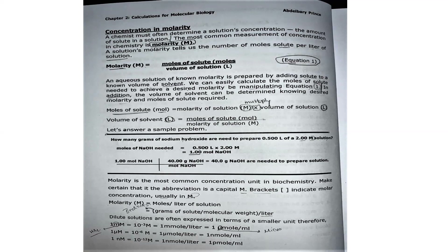In addition, the volume of solvent can be determined knowing the desired molarity and moles of solute required. Moles of solute equal molarity of solution multiplied by volume of solution. Volume of solvent equals moles of solute divided by molarity of solution. Molarity is the most common concentration unit in biochemistry. Make certain that the abbreviation is a capital M. Brackets indicate molar concentration, usually in M. Molarity equals moles per liter of solution.